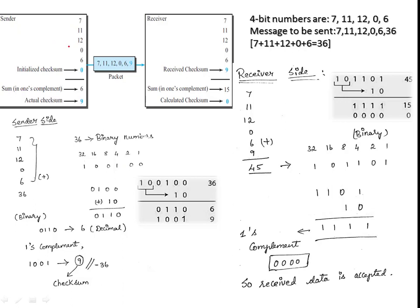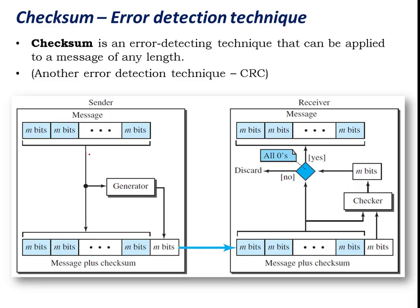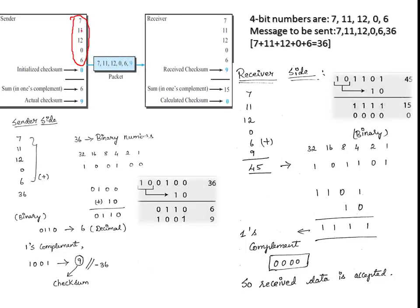Let us go through a numerical problem from the Forouzan textbook. The data we want to transmit are: 7, 11, 12, 0, and 6. Correlating with the block diagram, these are the values represented as 4-bit binary numbers. All these values — 7, 11, 12, 0, and 6 — are added together, giving a result of 36, and the complement of 36 is minus 36.